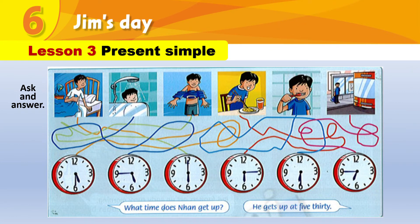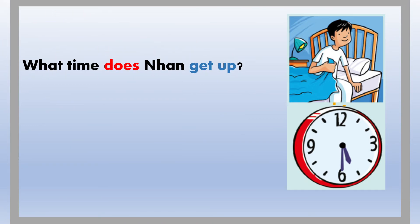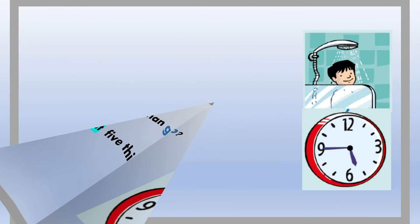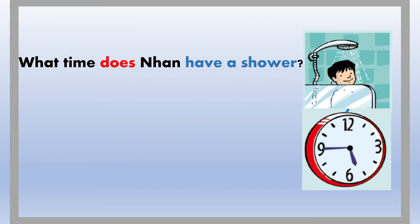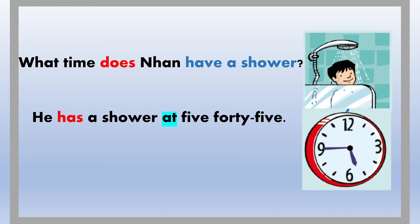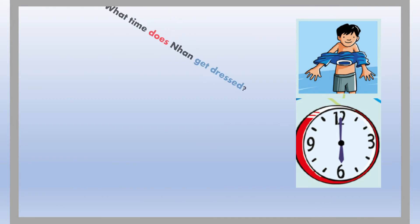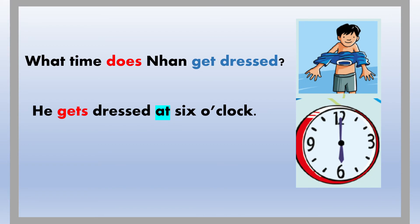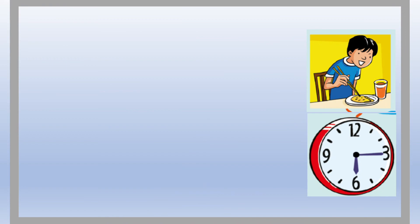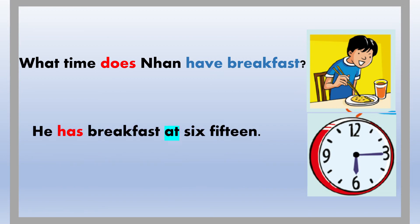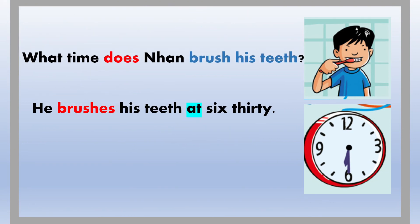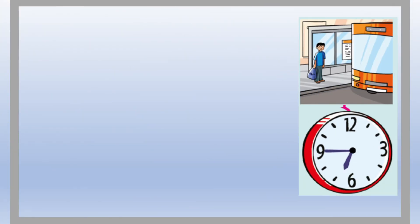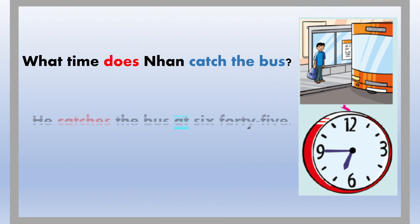Now let's move to Lesson 3: ask and answer Bao Nhan's daily routines. What time does he do these things? What time does Nan get up? He gets up at 5:30. What time does Nan have a shower? He has a shower at 5:45. What time does Nan get dressed? He gets dressed at 6 o'clock. What time does Nan have breakfast? He has breakfast at 6:15. What time does Nan brush his teeth? He brushes his teeth at 6:30. What time does Nan catch the bus? He catches the bus at 6:45.